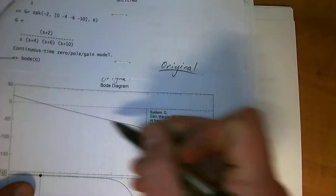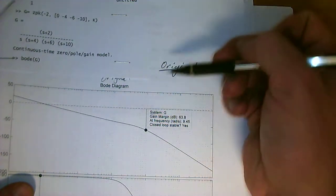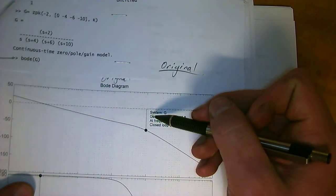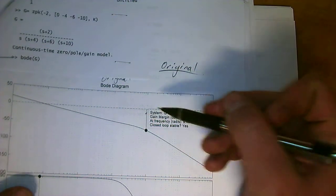So basically, take the magnitude plot and shift it up 53.8 dB so that you end up with 10 dB, basically right there.